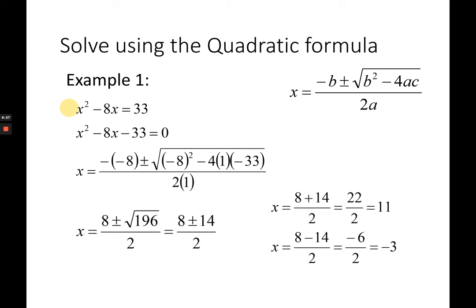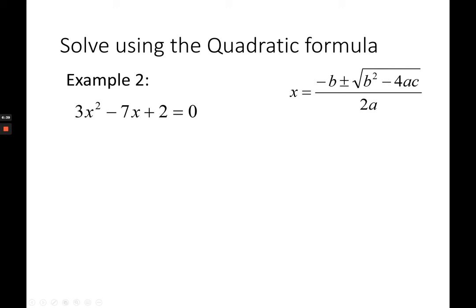The checking is left for you to try. Of course, you can apply checking by factoring method or by graphing method. Let's have your second example. Your second example is already in the standard form. A is 3, B is negative 7, C is 2.